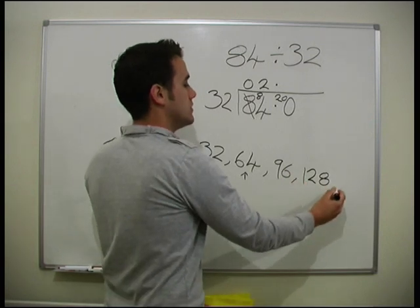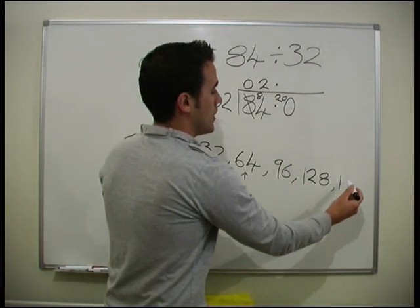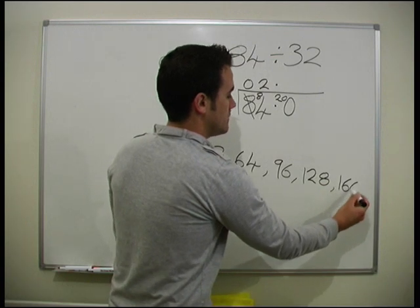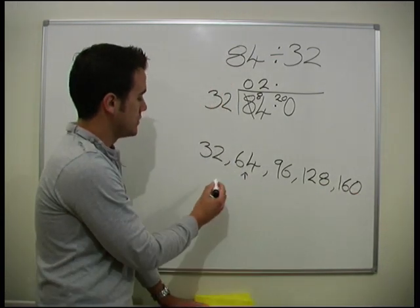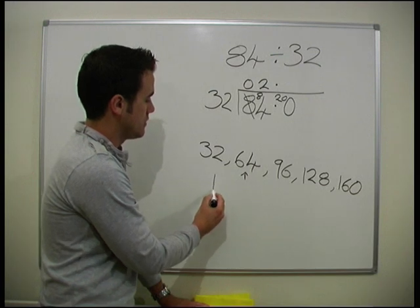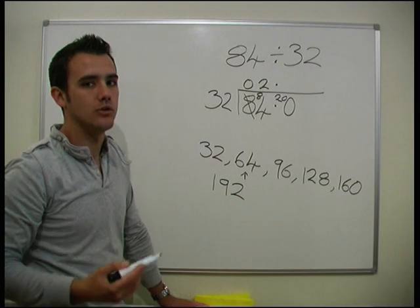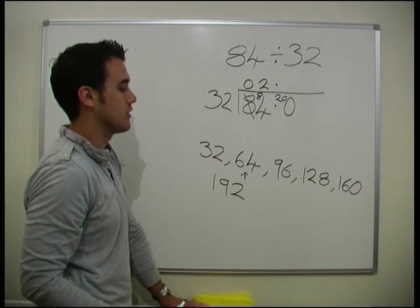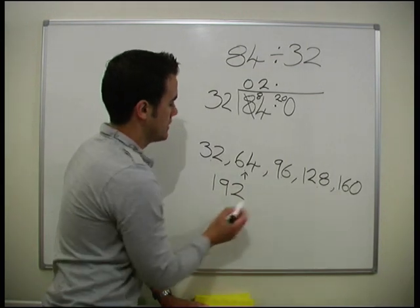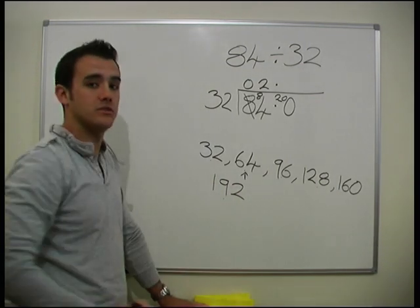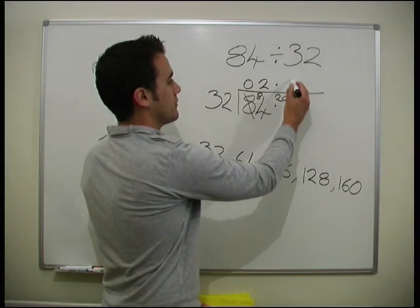96 plus 32 takes us to 128, add another 32 takes us to 160, add another 32 brings us up to 192. We can see we're not going to be able to add any more 32s to get to 200. So 6 32s fit into 200, and we put our 6 here.